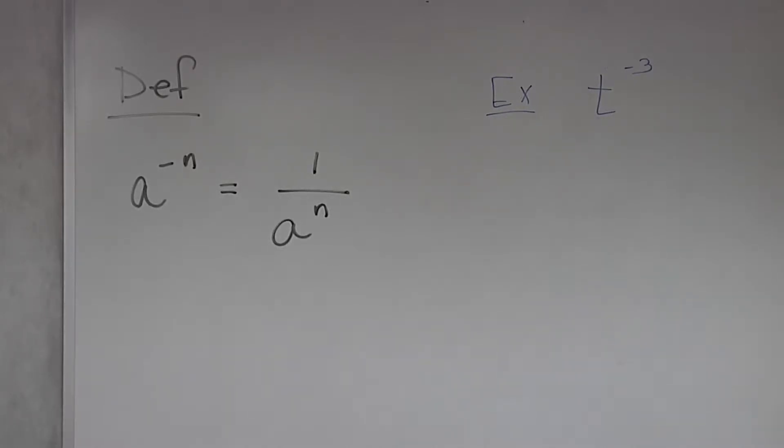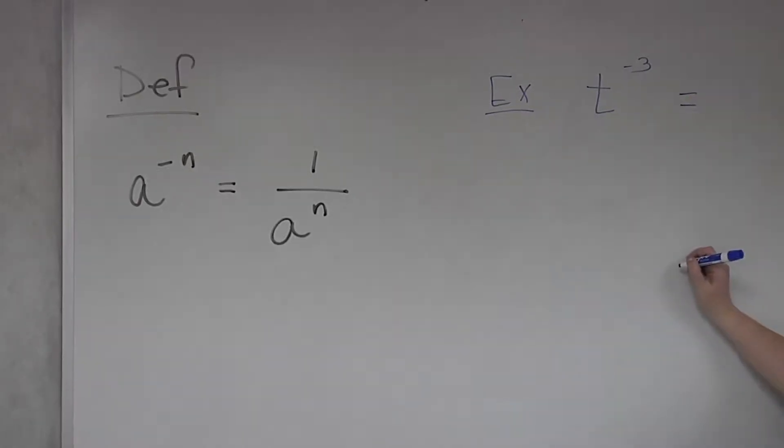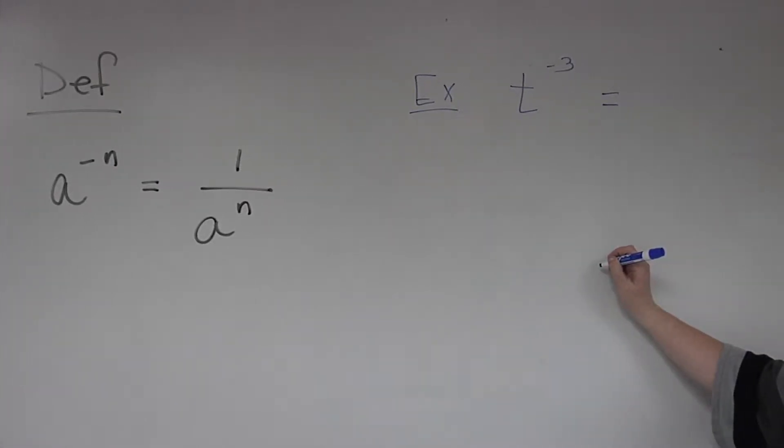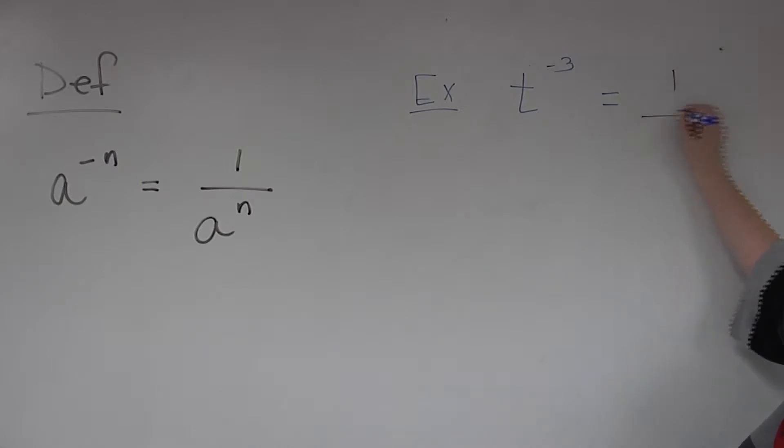So what do you think is going to change? The negative. The negative, or what's it going to become? Positive. And when it becomes a positive, what else will happen? The t is like the same thing as 1. It would be 1 over t to the third.